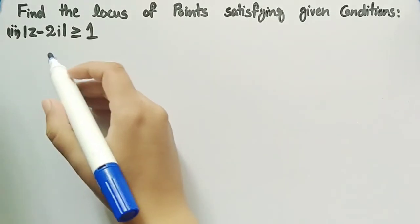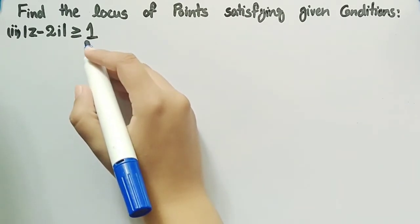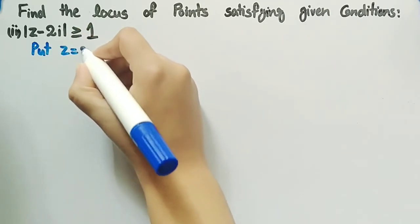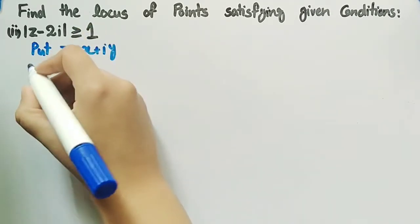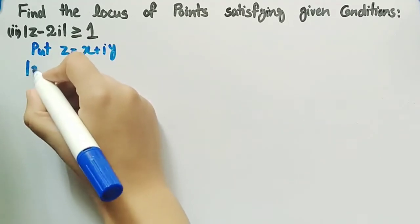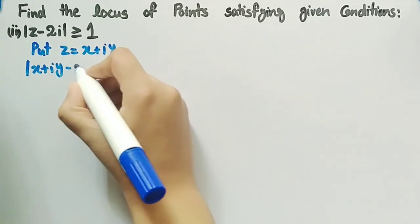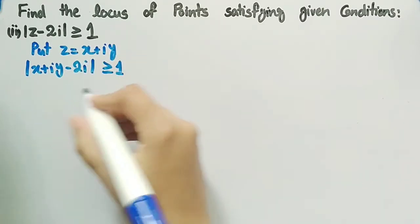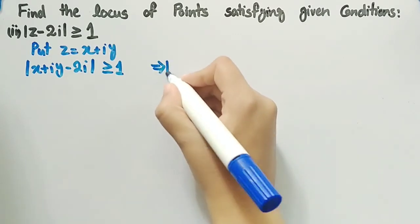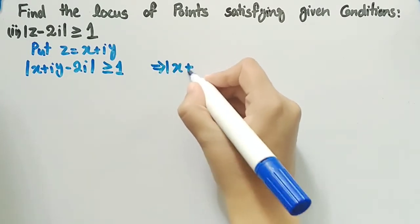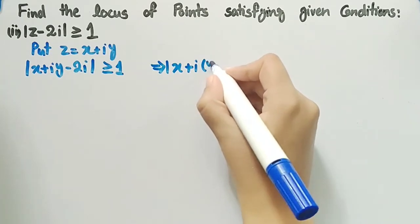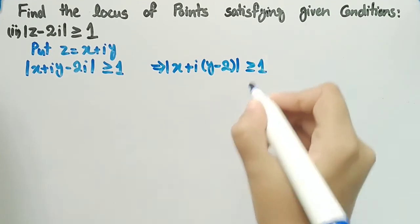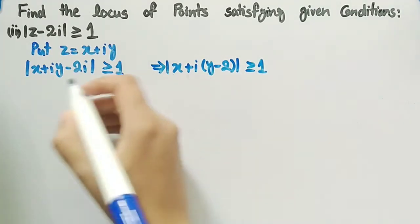The second condition is mod of z minus 2 iota greater than or equal to 1. Firstly, we will put z equal to x plus iota y and we get mod of x plus iota y minus 2 iota greater than or equal to 1. We can also rewrite it as mod of x plus iota times y minus 2 greater than or equal to 1. Now taking the modulus of this complex number,